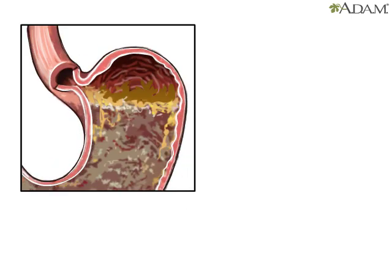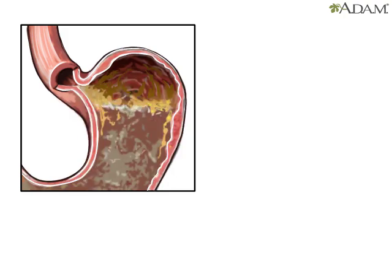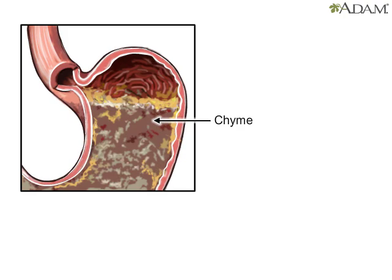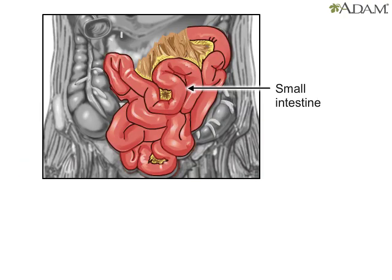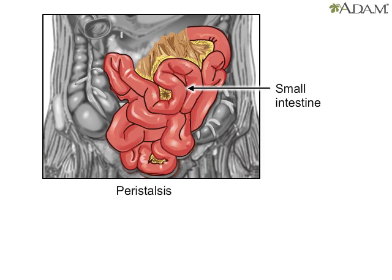There, the food is churned into a liquid mixture called chyme that moves into the small intestine, where peristalsis continues.